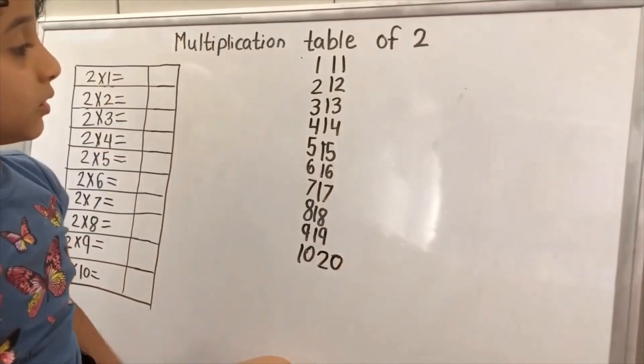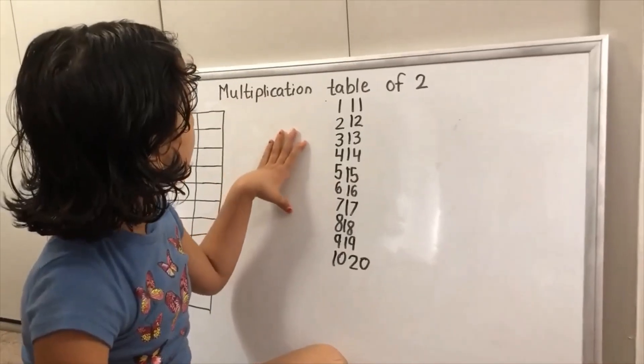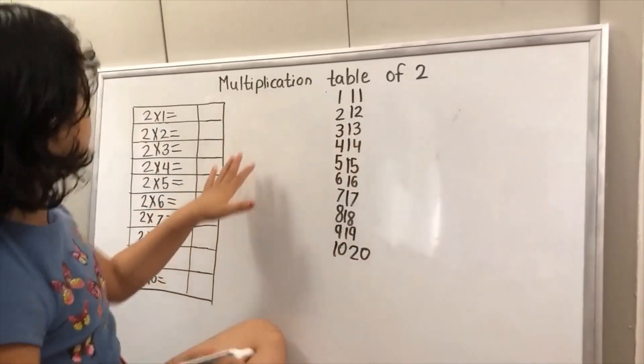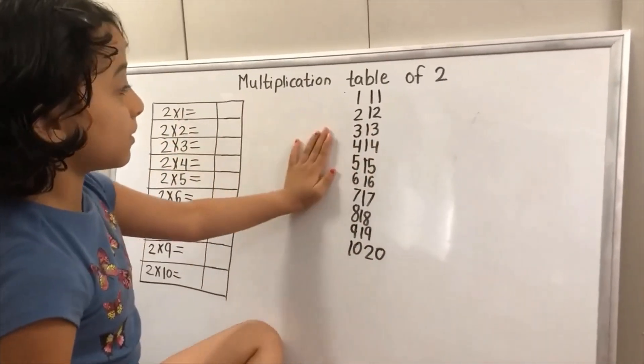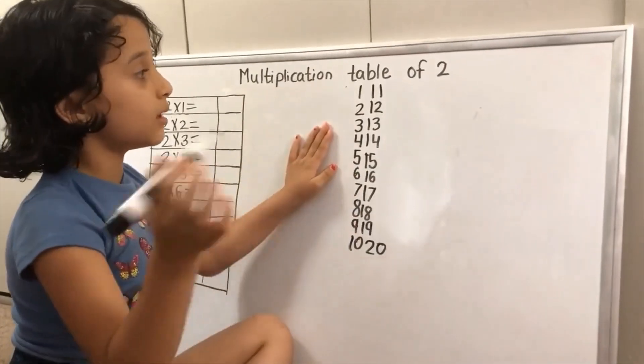So, let's tell you the trick. This is my two times table. So, let's see.